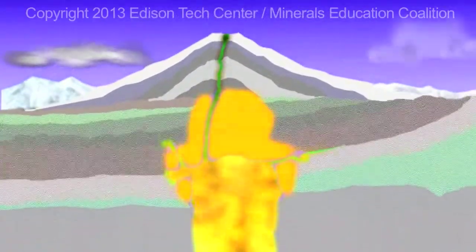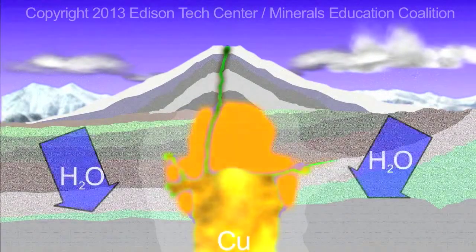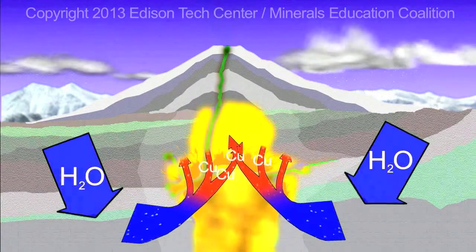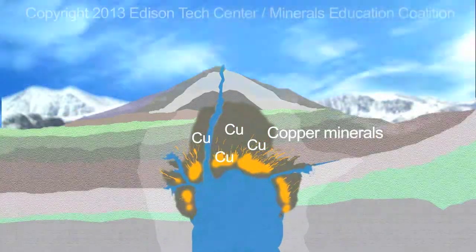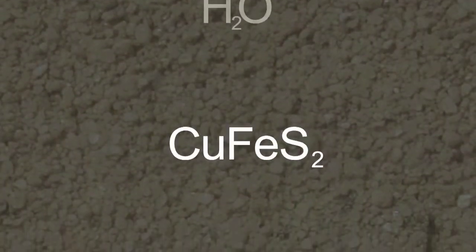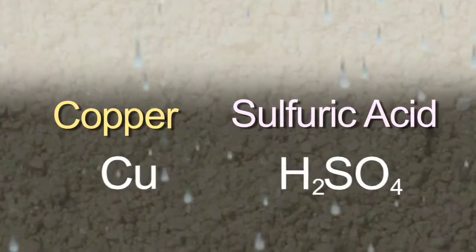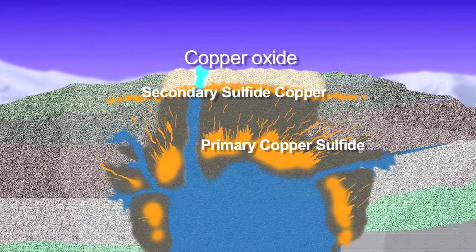The steam and the magmatic or hydrothermal fluids carry metals. And then over time, when there's exposure of the sulfide mineralization to the elements — weather, heat, oxygen from the air — you get a weathering process of the sulfide mineralization. The sulfides oxidize and become sulfuric acid and drain down in the deposit, carrying copper mineralization with them.